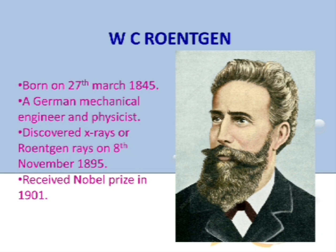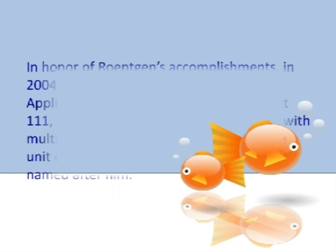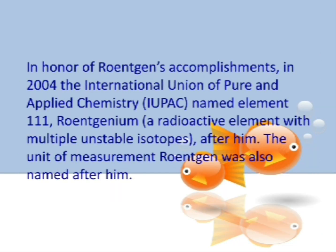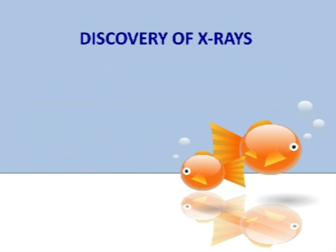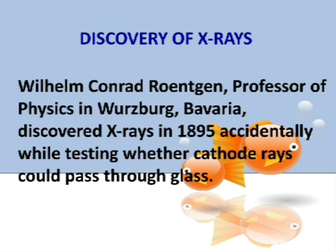For this discovery he received the Nobel Prize in 1901. In honor of Röntgen's accomplishment, the International Union of Pure and Applied Chemistry (IUPAC) in the year 2004 named a new element 111 as Roentgenium, which is a radioactive element with multiple unstable isotopes. Also, the unit of measurement Röntgen was named after him.